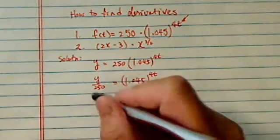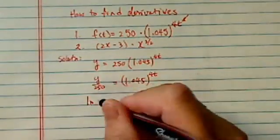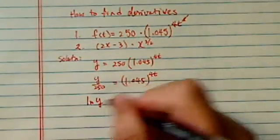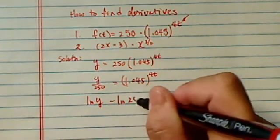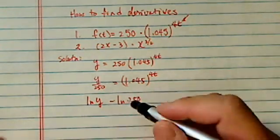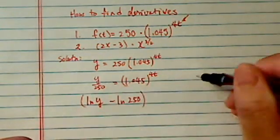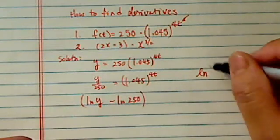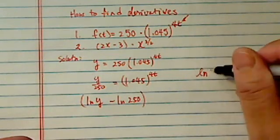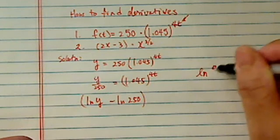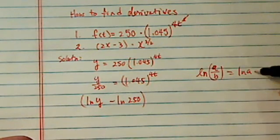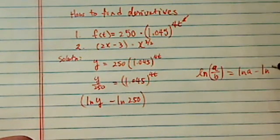I'm going to take a natural log on both sides. So natural log of y minus natural log of 250. The reason I did that is there's a property of natural logs that's ln(a/b) that's equal to natural log of a minus natural log of b.